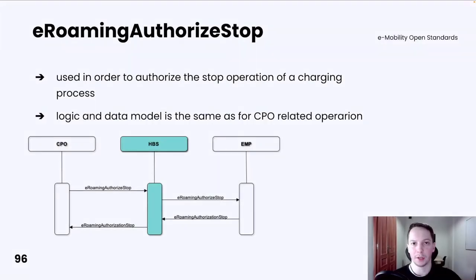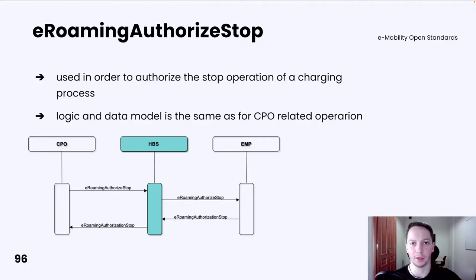The next operation is E-Roaming Authorize Stop. It is used for authorizing the stop of the charging process. The data model and logic are the same as for the CPO-related operation. EMP must be able to process an Authorize Stop request and return an E-Roaming Authorization Stop response.